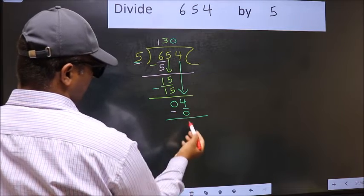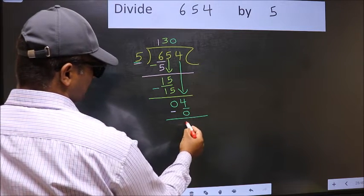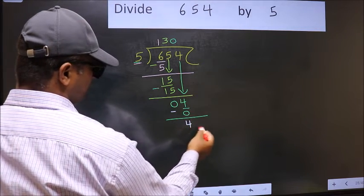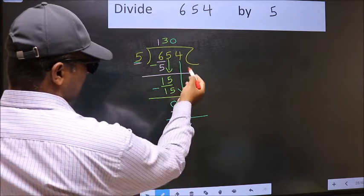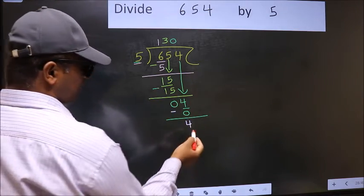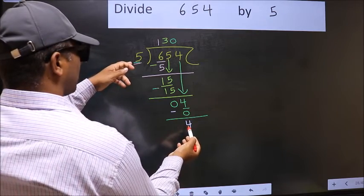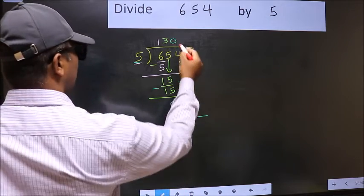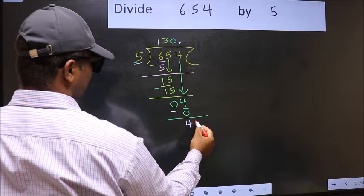Now you should subtract. 4 minus 0 is 4. Over here, we did not bring any number down, and 4 is smaller than 5. So now you can put dot and take 0.